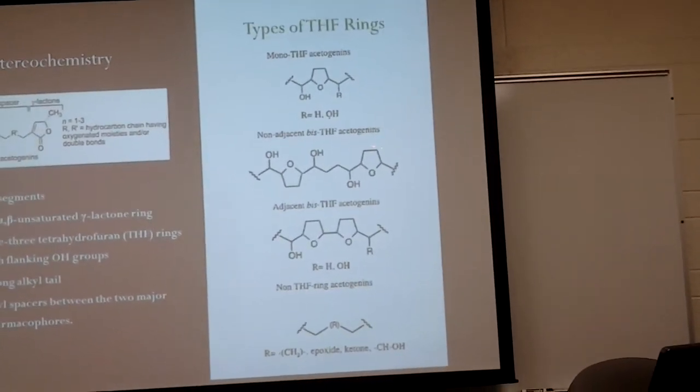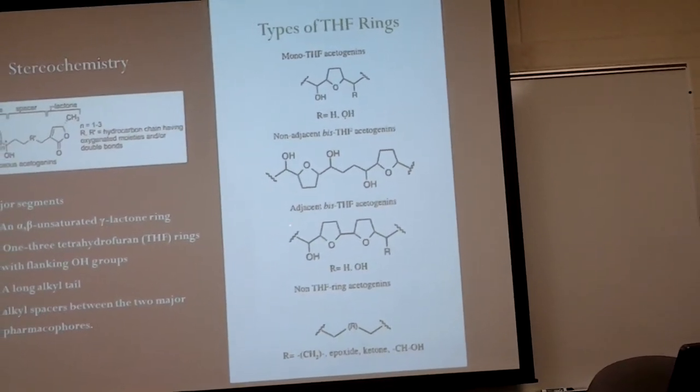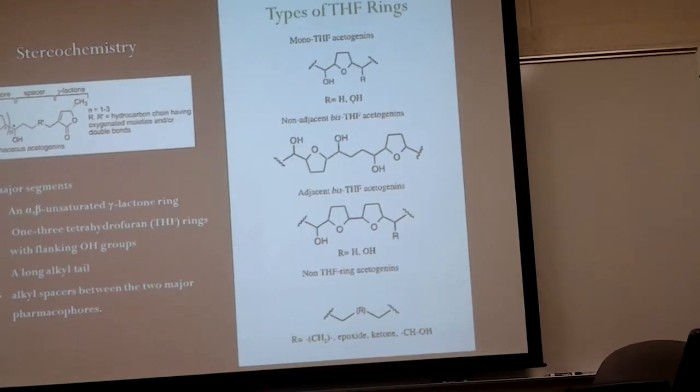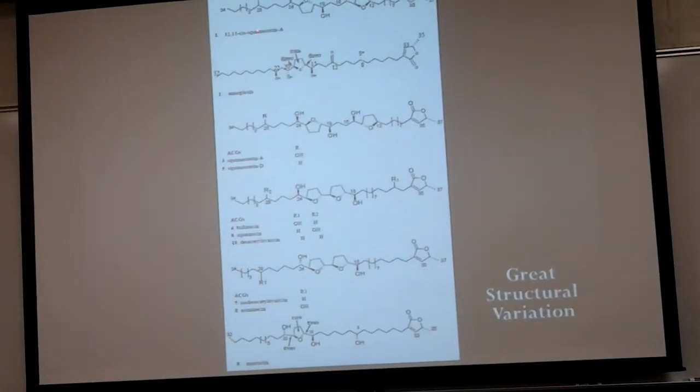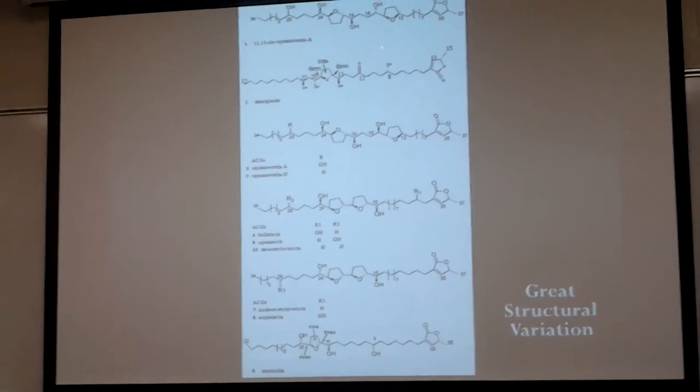These THF rings consist of mono, non-adjacent bis containing two THF rings, and the adjacent bis THF rings which face the same direction. All together, this gives acetogenins great structural variation, making it a very diverse molecule.